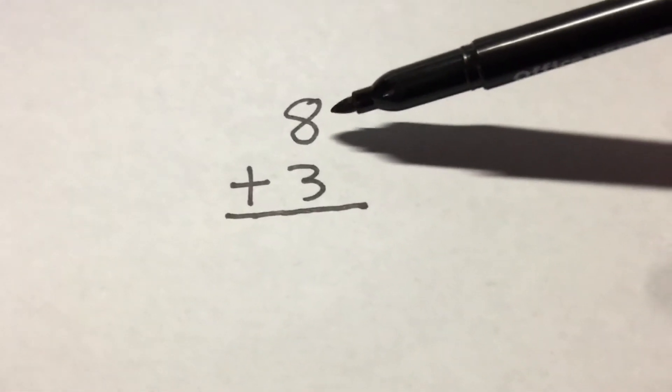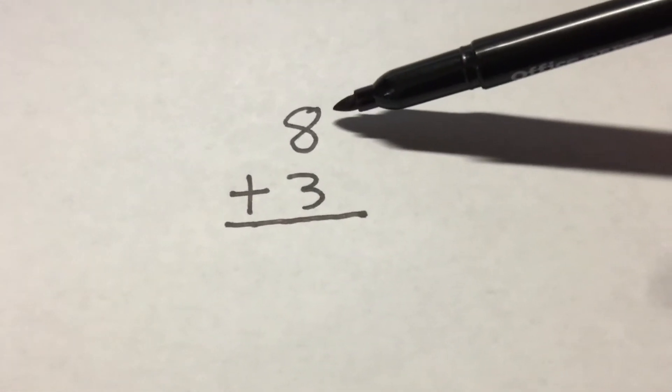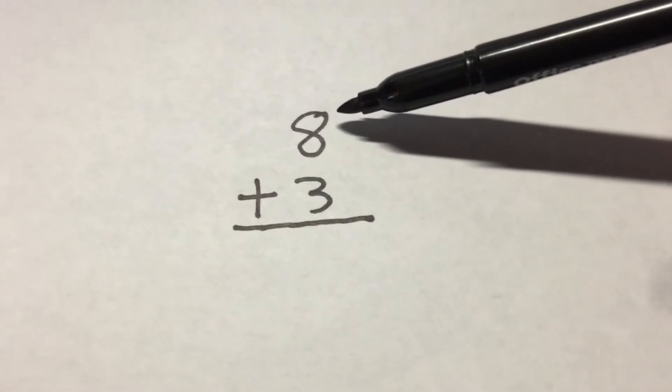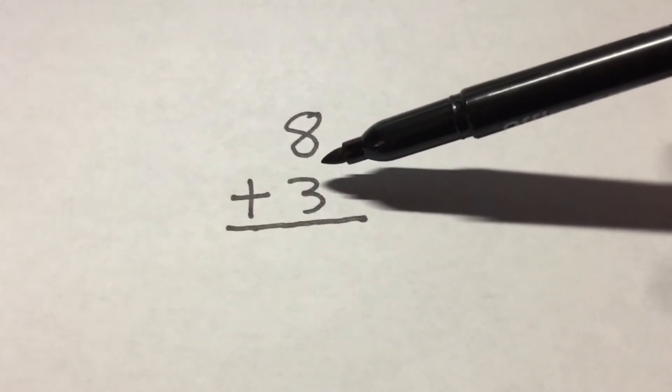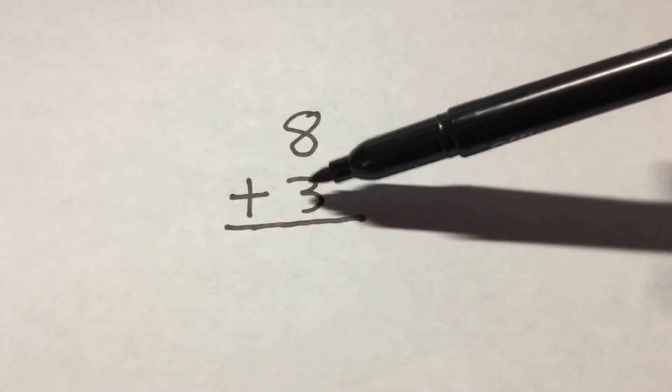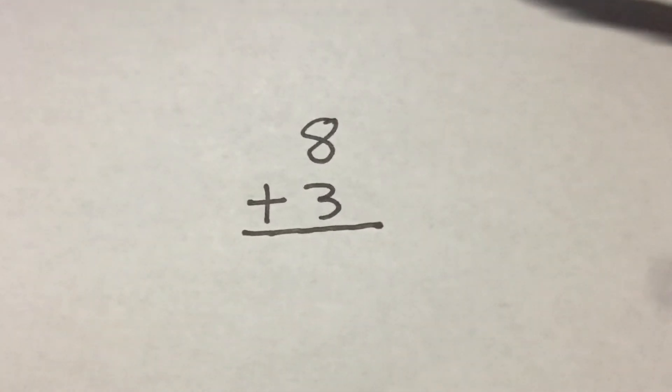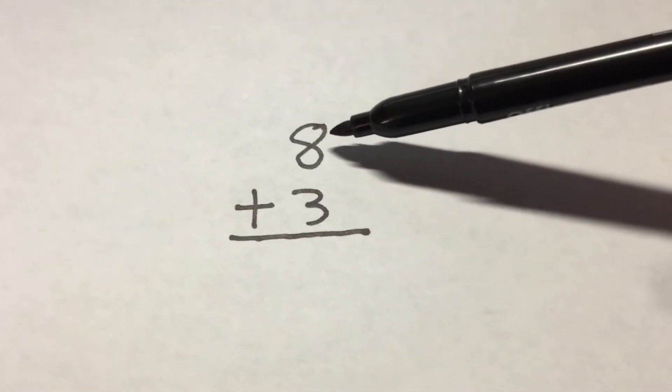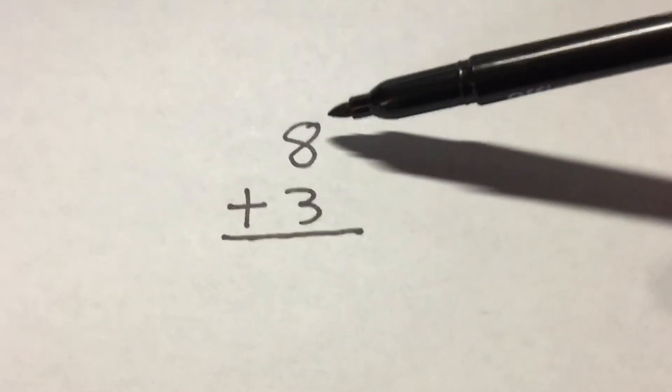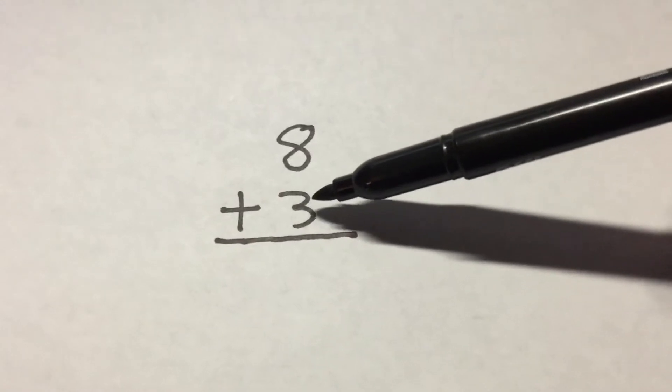So let's talk about some more traditional ways of adding these two numbers together. So 8 plus 3 - if you're just learning your numbers you might count up on your fingers to eight and then keep counting up: eight, nine, ten, and eleven. Counting on would be picking the larger number, in this case eight, and counting on three more: eight, nine, ten, eleven.